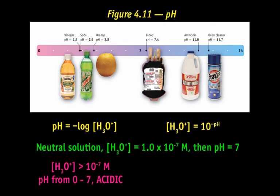Alternatively, if the hydronium ion concentration is less than 10^-7, the pH ranges from 7 to 14, and the solution is basic. For example, if the hydronium ion concentration is 10^-10, the log of 10^-10 is -10, so the pH is 10, a basic solution.